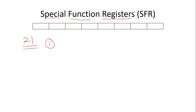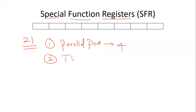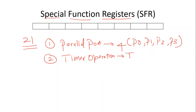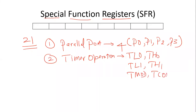The 21 SFRs are classified into categories. For parallel port operation, there are four SFRs: Port 0, Port 1, Port 2, and Port 3. For timer operation, there are six SFRs: TL0, TH0, TL1, TH1, TMOD (timer mode), and TCON (timer control) — totaling 4 plus 6 equals 10 SFRs so far.